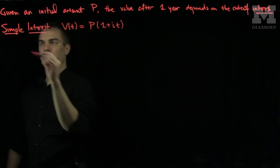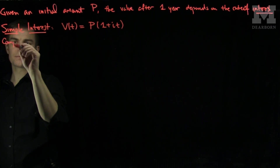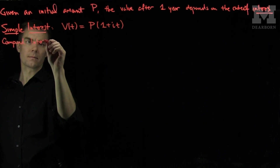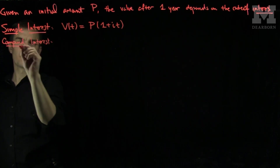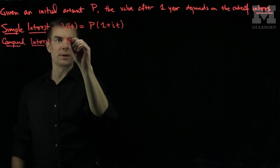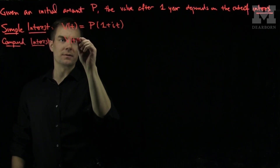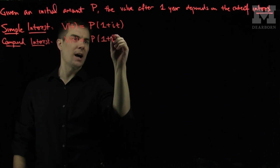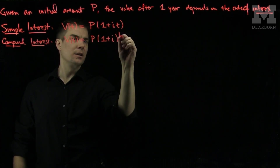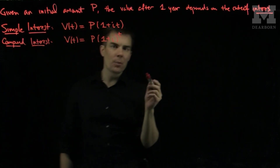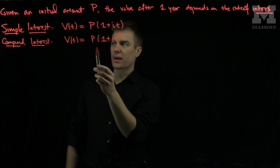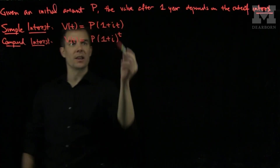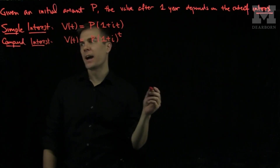The second type is compound interest. The compound interest formula is that v of t is equal to p times 1 plus i to the power t. And now we see the first order approximation of compound interest is simple interest by the binomial formula.